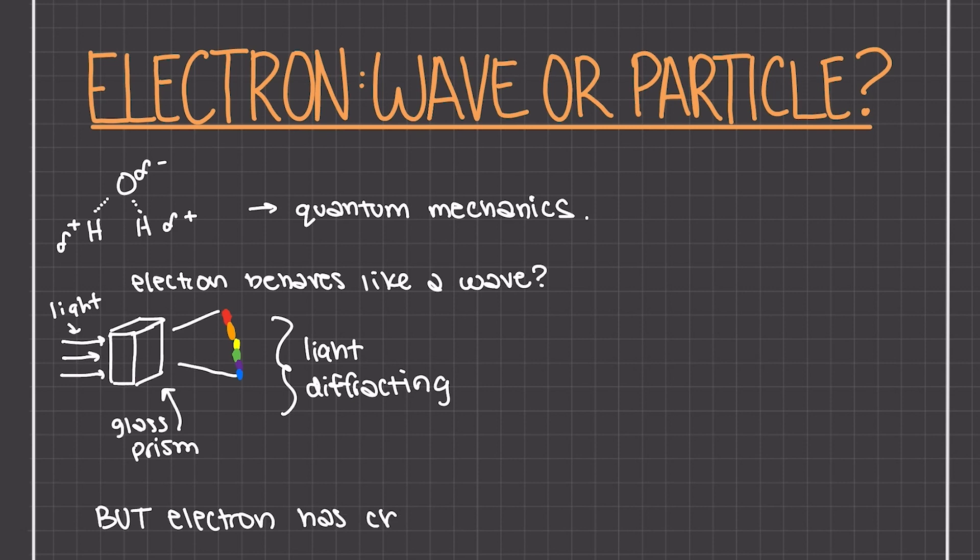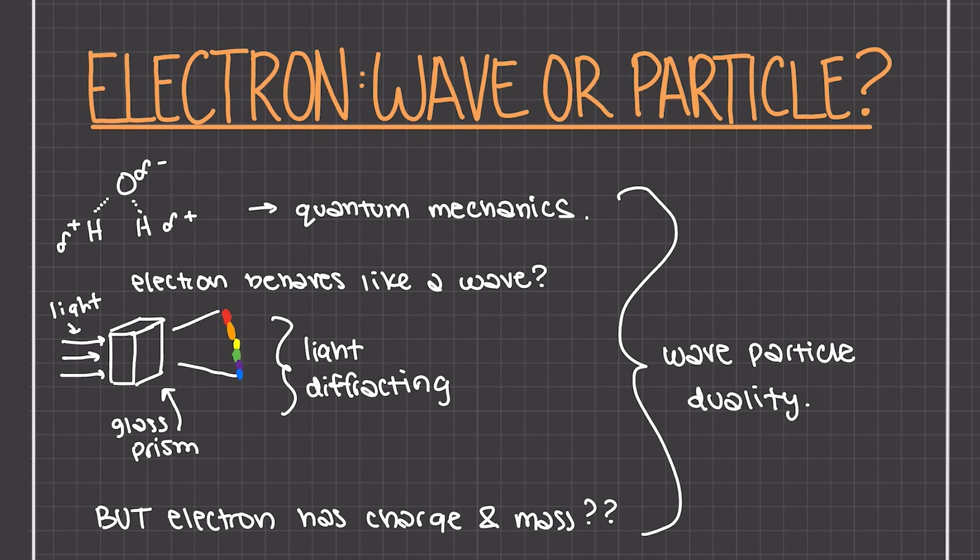But the electron has a charge and mass, meaning it does have the properties of a particle. Well, this brings in the idea of the wave-particle duality, where the electron behaves both as a wave and a particle.